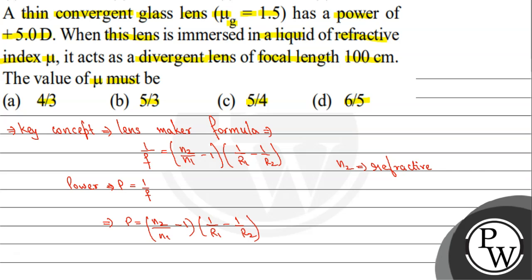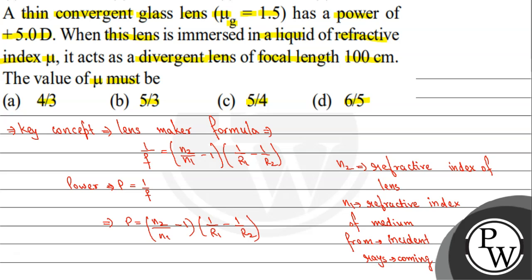Here n2 represents the refractive index of the lens, and n1 represents the refractive index of the medium from which the incident rays are coming. R1 and R2 represent the radii of curvature of the first and second surfaces of the lens.